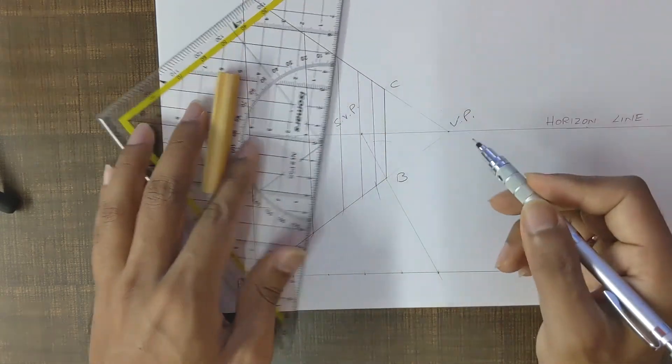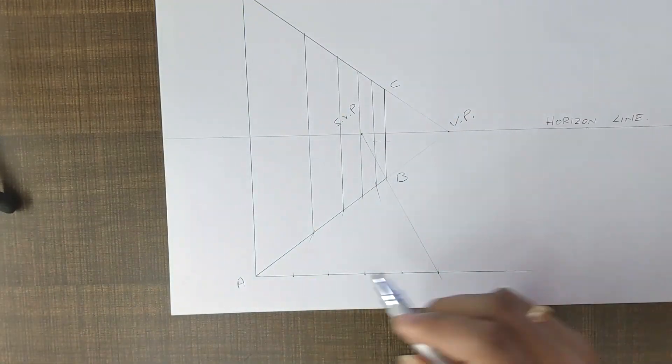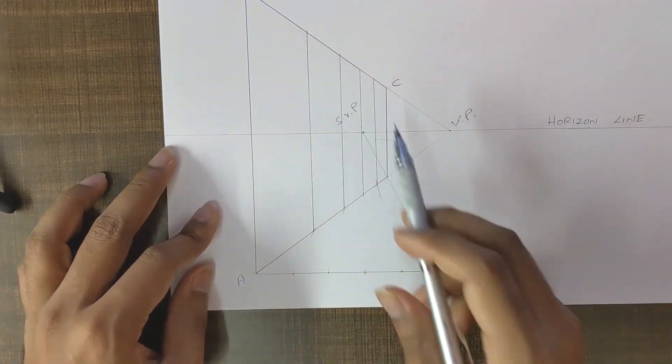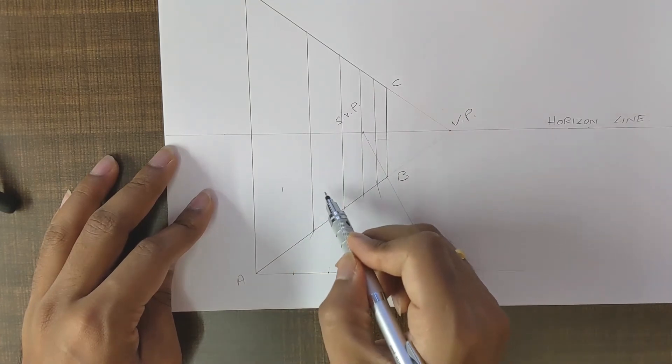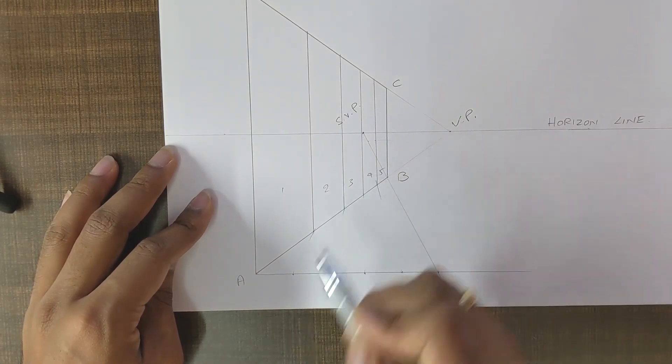This is a very quick and easy way to achieve odd number of segments in perspective. So here we have segments one, two, three, four and five.